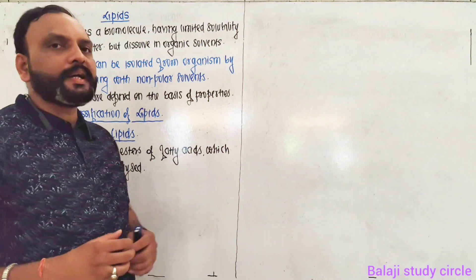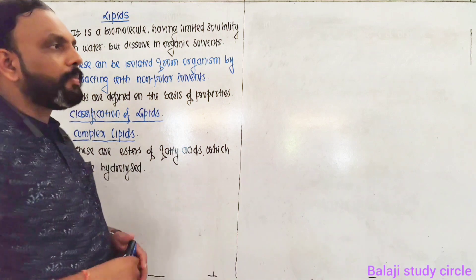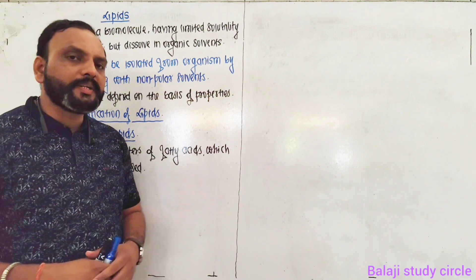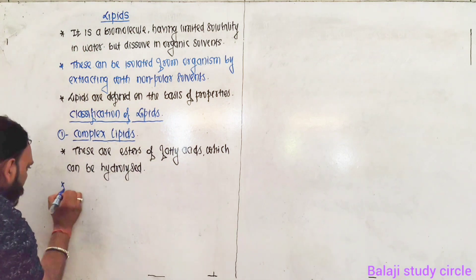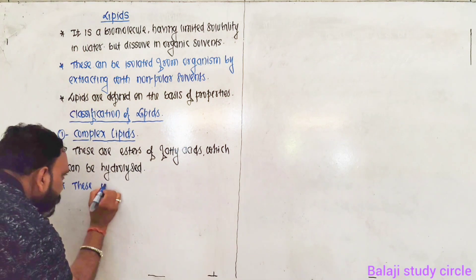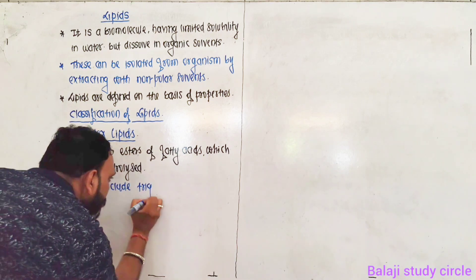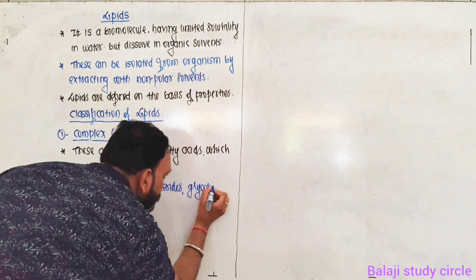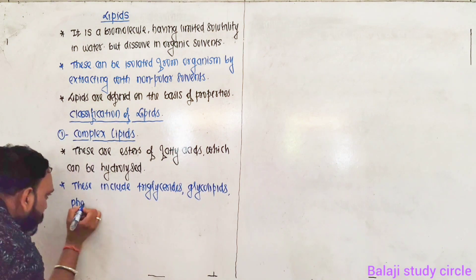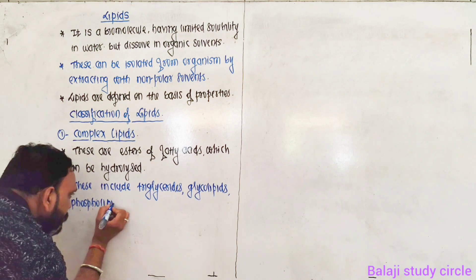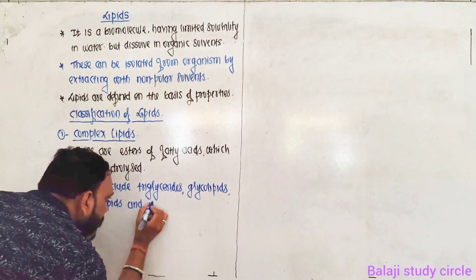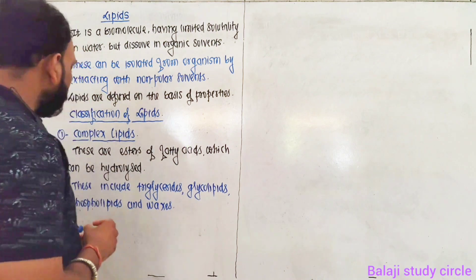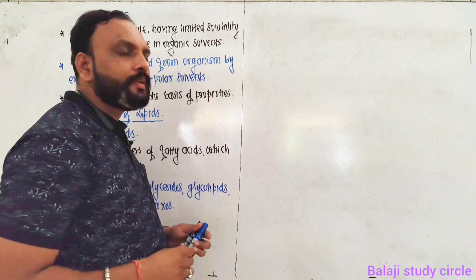Complex lipids include triglycerides, glycolipids, phospholipids, and waxes. This is the complex lipid category. In this, the first type we will see is triglycerides.